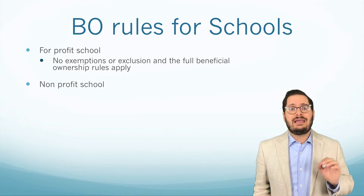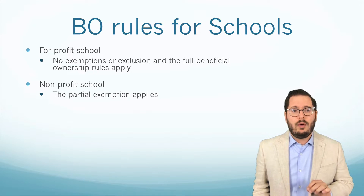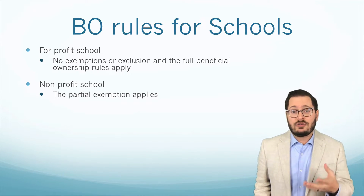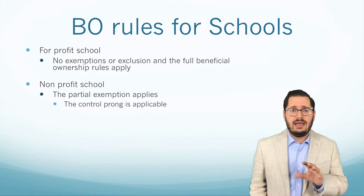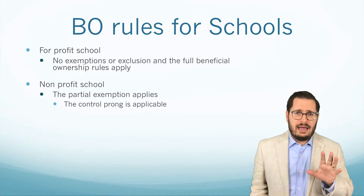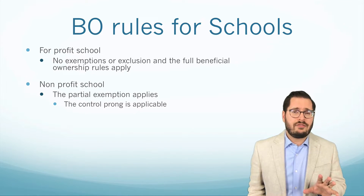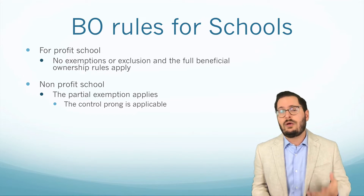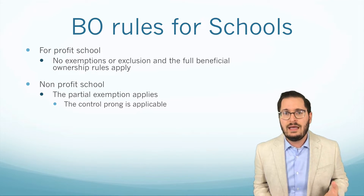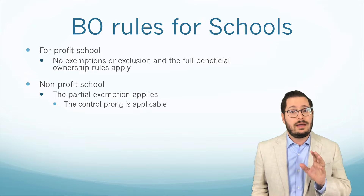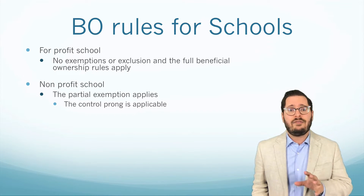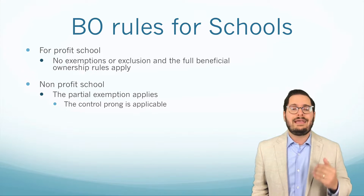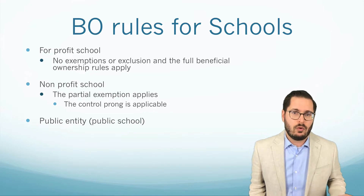If the school is a non-profit school, what we have to determine for how the partial exemption applies is to see if this is an actual non-profit corporation or an unincorporated association. Typically, a school is going to be a non-profit corporation, so in this case the non-profit is going to have the control prong be applicable to this rule.